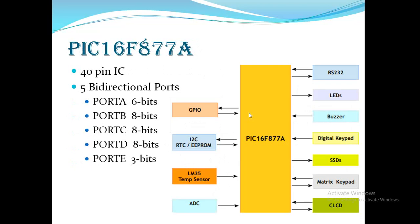The PIC 16F877A is a 40-pin IC with five bi-directional ports: Port A (6-bit), Port B (8-bit), Port C (8-bit), Port D (8-bit), and Port E (3-bit). It also features RS-232 for communication, LEDs, buzzer, digital keypad, four seven-segment displays, matrix keypad, character LCD, ADC, DAC, LM35 temperature sensor, I²C protocol, RTC, EEPROM, and GPIO.